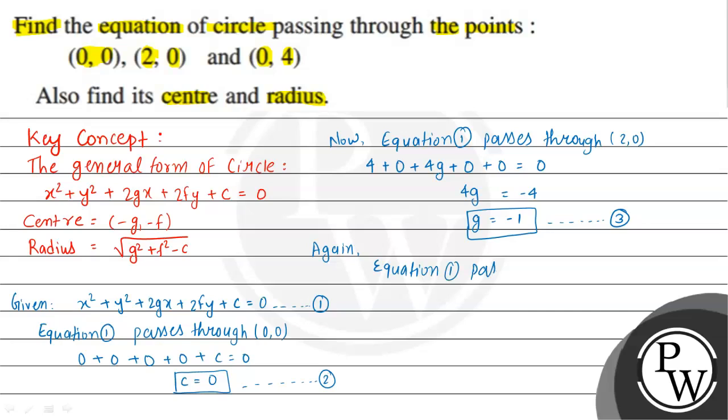The third point is (0,4), so equation 1 passes through (0,4). Putting x = 0 and y = 4 in equation 1: 0 + 16 + 0 + 8f + 0 = 0. So 8f = -16 and f = -2. This is equation 4.